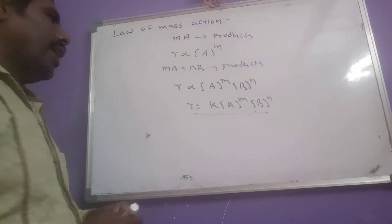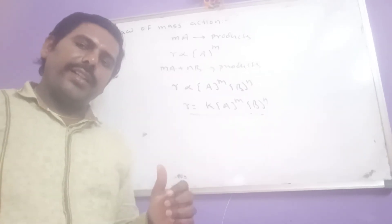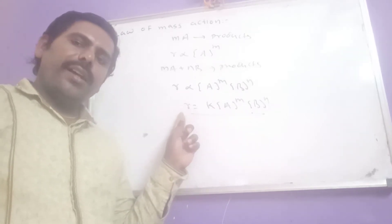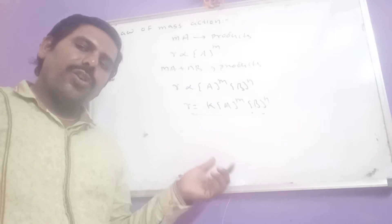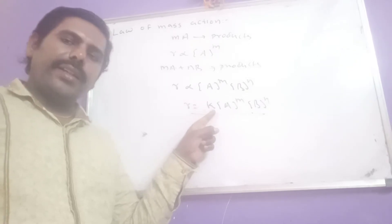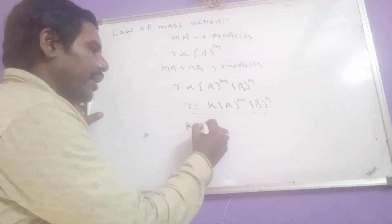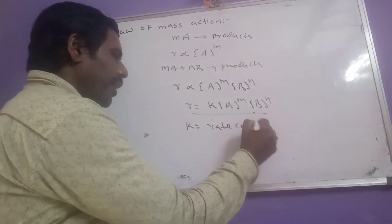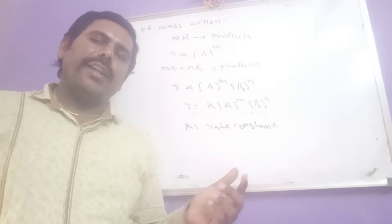This is known as the rate equation or rate law. A mathematical equation which gives the relation between the rate of a reaction and the active masses of the reactants is known as the rate equation or rate law. In this, k is known as the specific reaction rate, or we can call it speed constant, velocity constant, or rate constant.